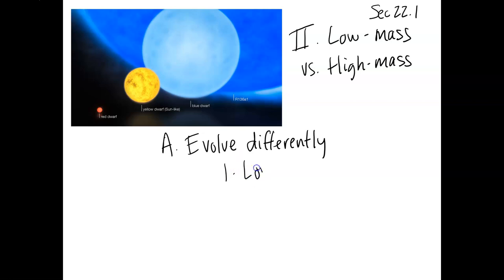So what is a low mass star? A low mass is defined as a star that has a mass less than eight times the mass of our sun or eight solar masses.